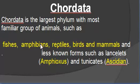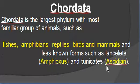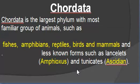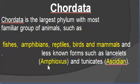There are also non-familiar chordate animals. Amphioxus is a fish-like chordate, and Ascidian is also a chordate. They are rare and less well-known animals. They have a notochord, and in the adult stage the notochord persists — they do not develop a bony backbone.